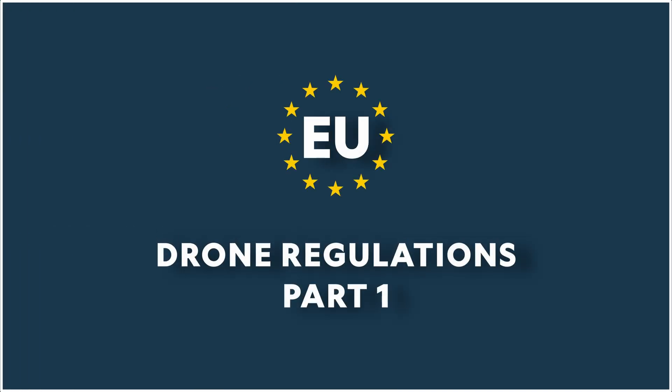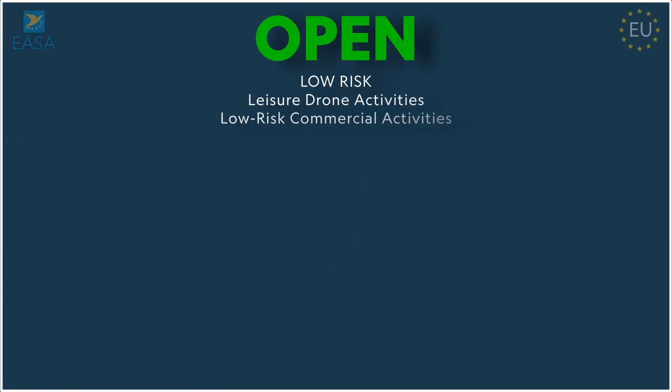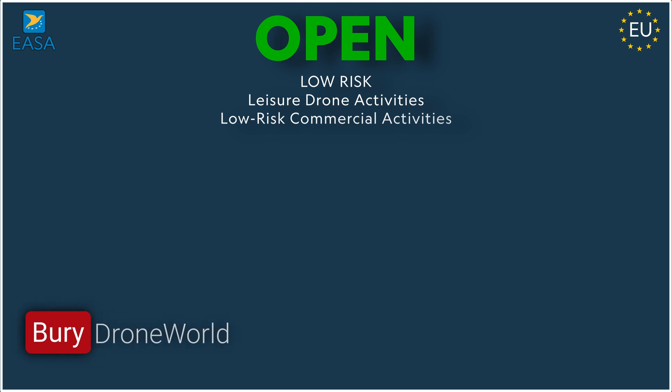In the EU, drones operate in three main categories. The first one is the open category, which is a low-risk category. It is reserved for leisure drone activities like hobby flying and low-risk commercial activity, and this is the category we're going to cover in this video.